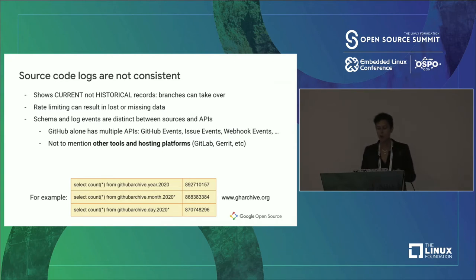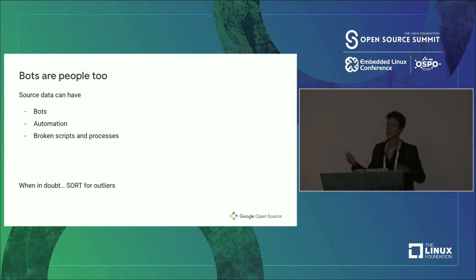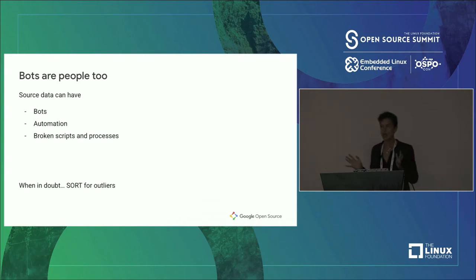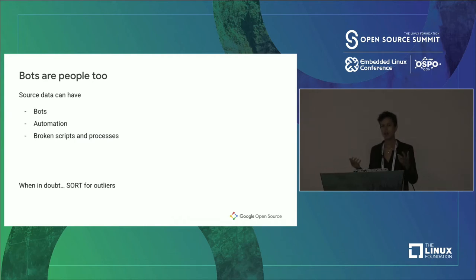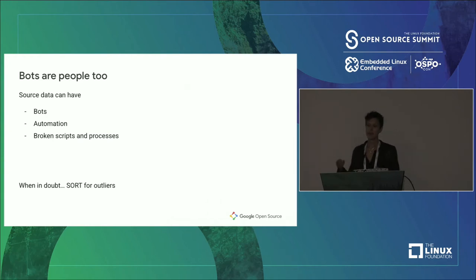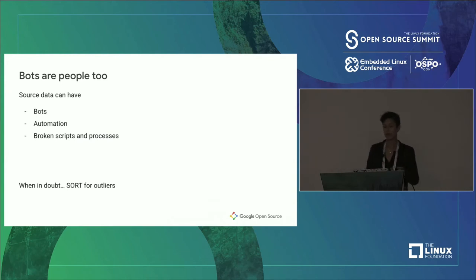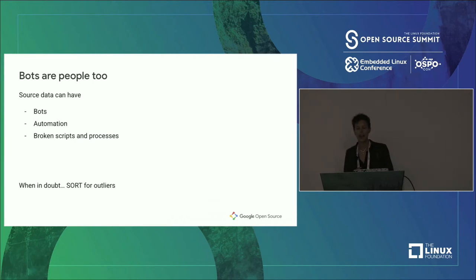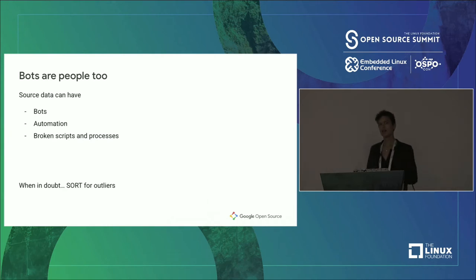Another part of the problem is working with bots. In other data sets there's always machine data, but with source code logs there's a lot more automation and bots woven into what's being collected as activity around a project. Bots could be labeled as bots, but they could also be scripts coming from personal accounts, and you can run into the challenge of something being broken and causing a lot more activity.